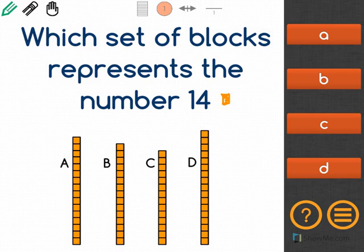For A, I count 1, 2, 3, 4, 5, 6, 7, 8, 9, 10, 11, 12, 13, 14, 15, 16. That's not the correct answer.